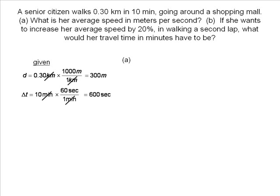In part A we are looking for average speed. Here is our formula for average speed. We substitute in our numbers and find she walks at an average pace of 0.5 meters per second.